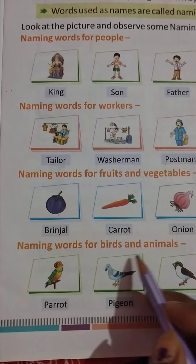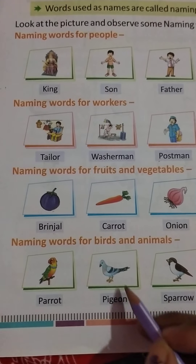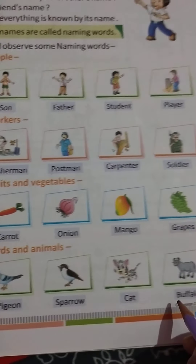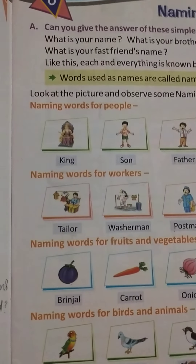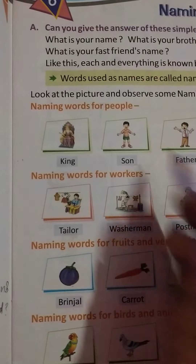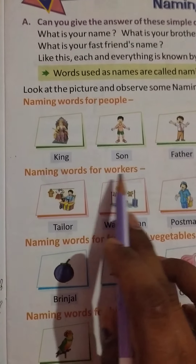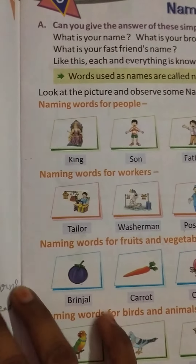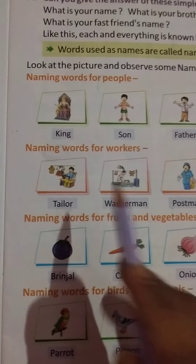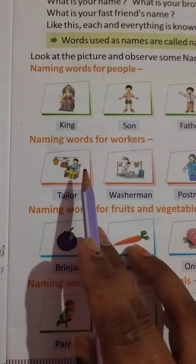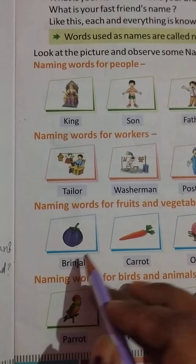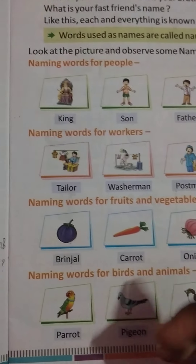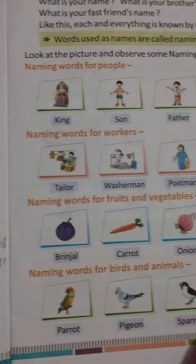Naming words for birds and animals: parrot, pigeon, sparrow, cat and buffalo. Samajh mein aaya? Yani sab ke naam hain. Logo ke liye, jo workers hote hain — jo particular kaam karte hain — woh apne naam se bhi jaane jaate hain. Jaise darji hote hain, woh kapde seelta hai, toh darji ke naam se jaana jaata hai. Aur ye sabzi hai, fruits aur phal hain, aur ye pakshi aur jaanwaron ke naam hain. Okay students, sab ke naam hote hain.